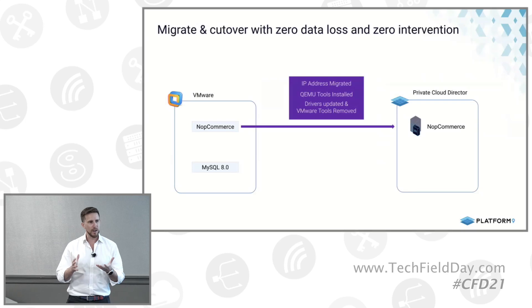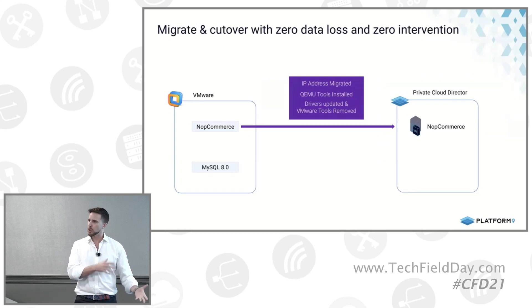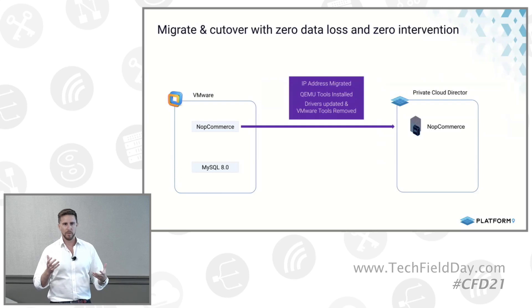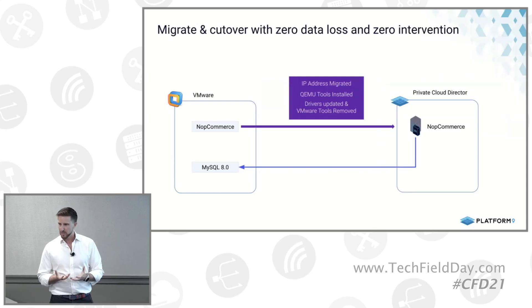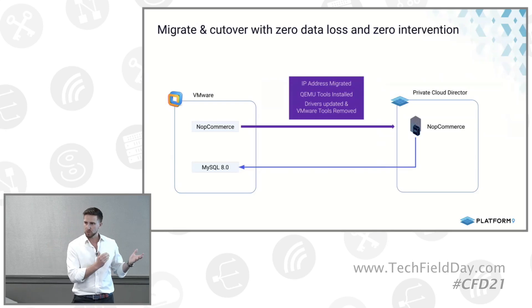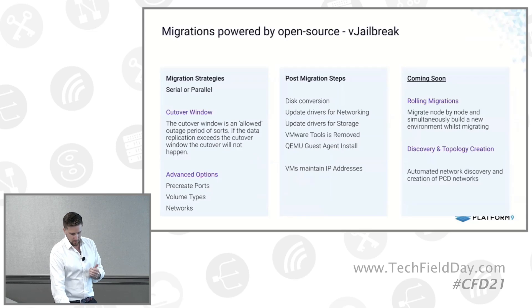The last piece of this migration was a bit of a discussion - what do we do with the database? Do we move it, or do we leave it in VMware to show that you can operate these two environments side by side and still deliver a service to your customers? So the last piece is once that VM migration is finished, the application will start up and reach back out to the database that's backing the application in VMware. And with that, we'll jump into the demonstration.